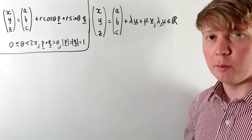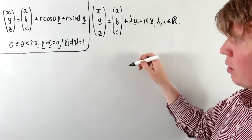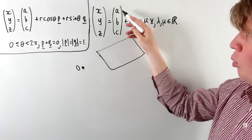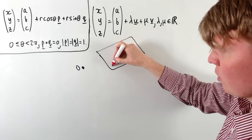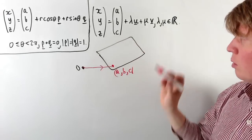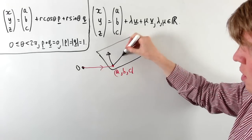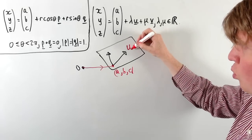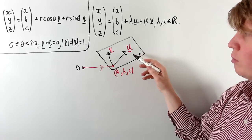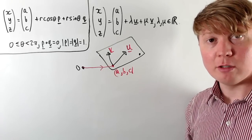Typically, the parametric form of a plane in 3D looks like this: (x, y, z) = (a, b, c) + s·U + t·V, where (x, y, z) is a general point on the plane. The vector (a, b, c) is the position vector of a known point on the plane. Then we can reach any other point in the plane by taking a linear combination of two vectors U and V contained in the plane — as long as these two aren't parallel to each other, we can always get to any point in the plane.